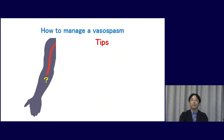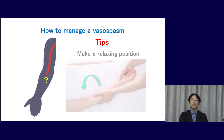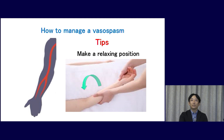Next, we address an important issue: how to manage brachial spasm. When you find a loss of arterial pulsation, turn the patient's arm to a good limb position. The pulsation is often revived immediately by the relaxing arm position.